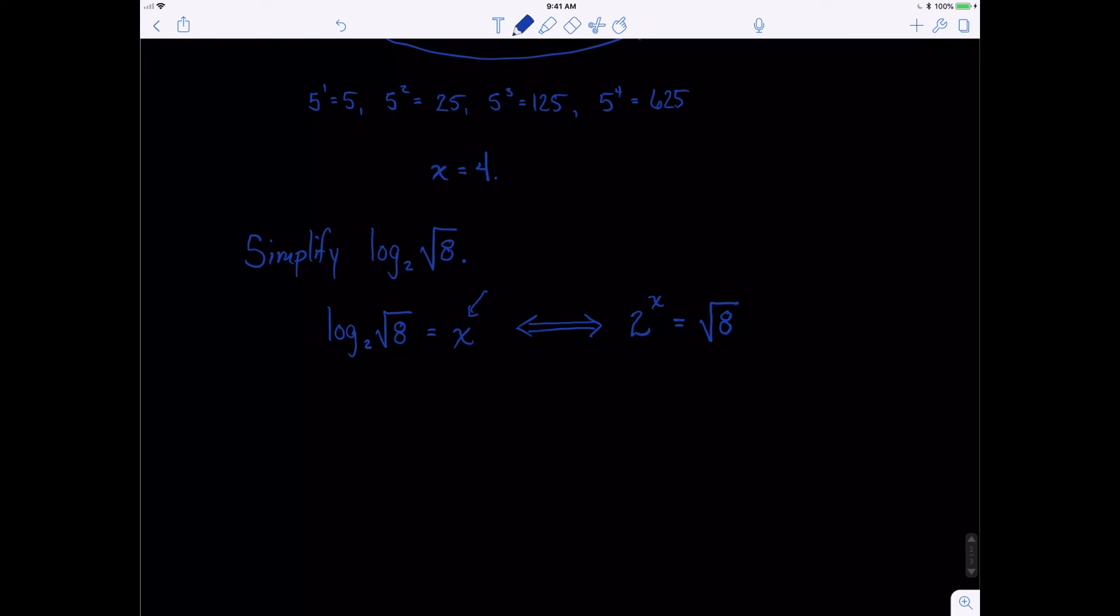Now, this one's kind of sneaky, but I think we can do this, because I know that 8 is 2 cubed. So let's do that. So now I at least have the same bases going on. So now I have the square root of 2 cubed. Now, you may jump to simplifying this, but now, now is when you think about fractional exponents. What's another way to write the square root of something? Well, remember, there's an implied 2 right there on the index. So this is the same as saying 2 to the x has to equal 2 to the 3 halves.